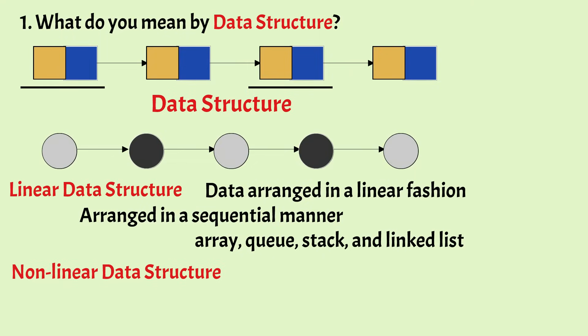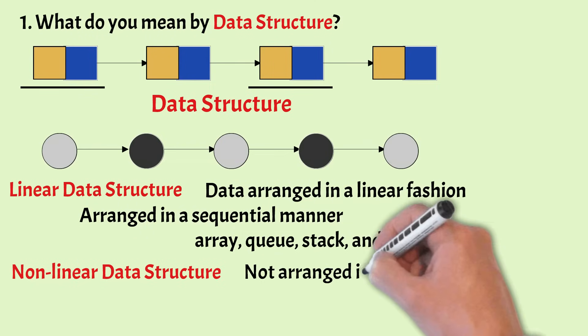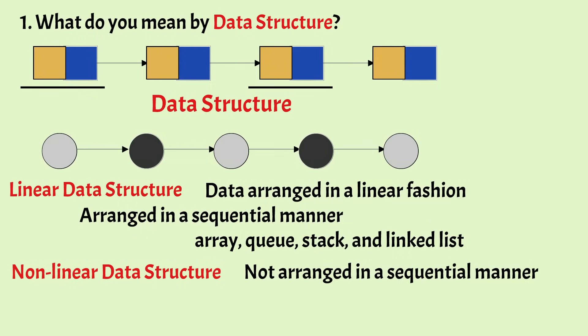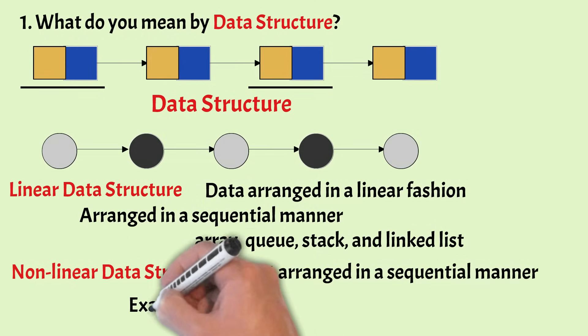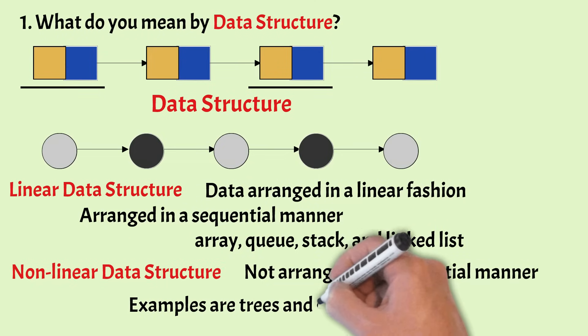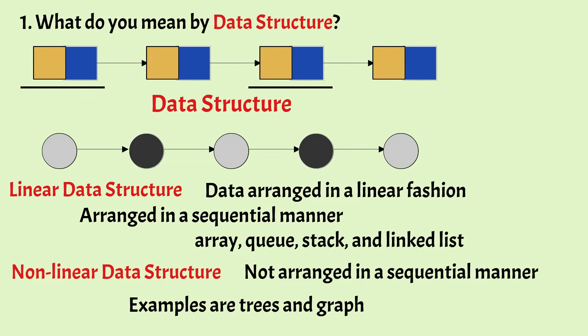In a non-linear data structure, the data items or elements are not arranged in a sequential manner. Examples of non-linear data structures are trees and graphs.